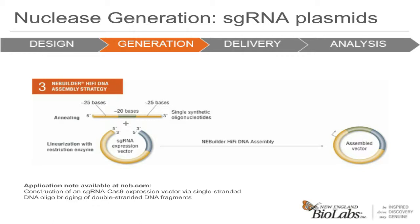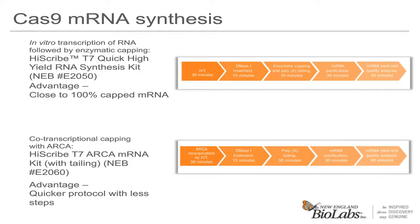Now we'll move on to Cas9 mRNA synthesis. To make Cas9 mRNA, the method would be in vitro transcription. There are two ways to make it by IVT. One method is to perform standard in vitro transcription using T7 RNA polymerase, followed by poly-A tailing and enzymatic capping using vaccinia capping enzyme, which NEB carries. The other method is to perform co-transcriptional capping, which incorporates the capped analog ARCA in the nucleotide mix, resulting in capped RNA being formed during the transcription reaction. This can be made even simpler if the poly-A tail is encoded in the transcription template, allowing one to skip the tailing reaction.